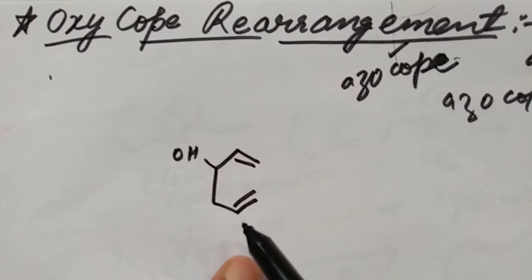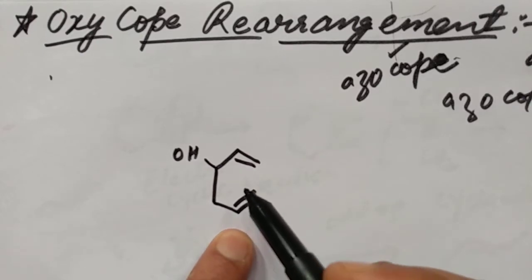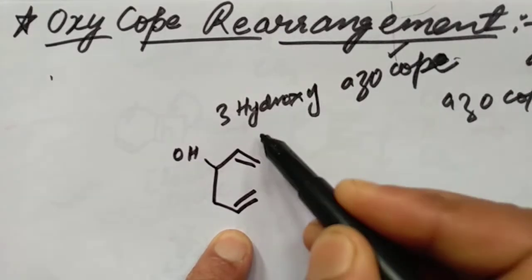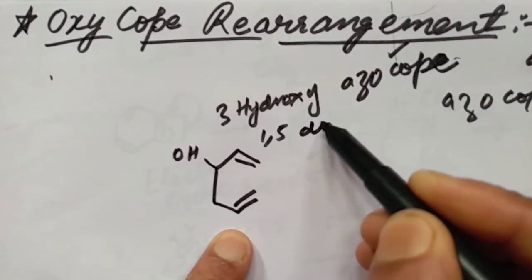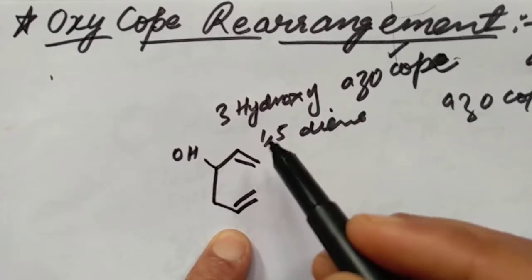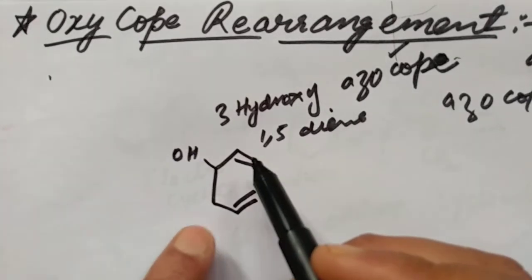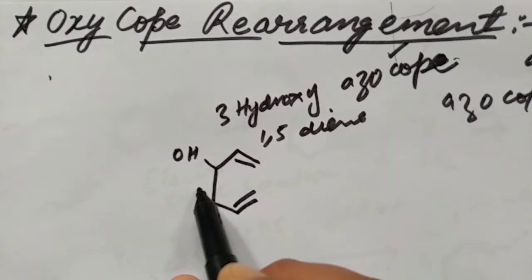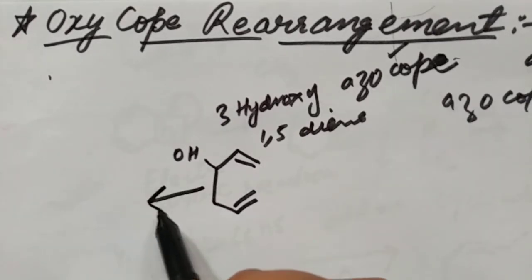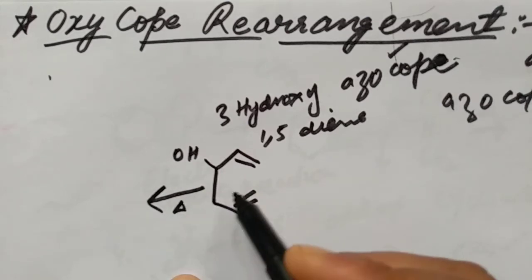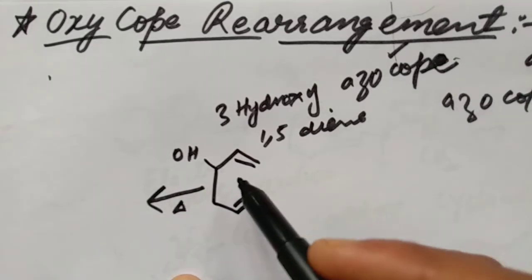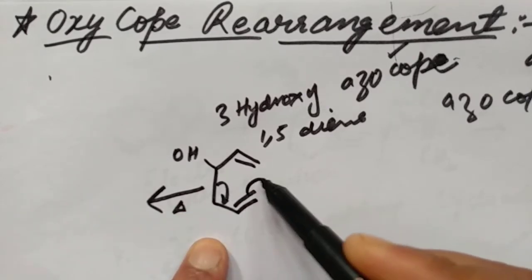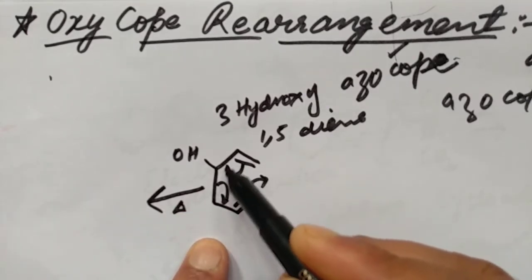This is 3-hydroxy-1,5-diene — this is the starting material. If we heat this compound, this bond shifts to this position, this one shifts to this position, and this one shifts to this position.